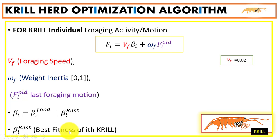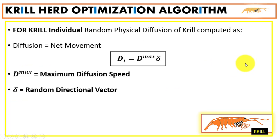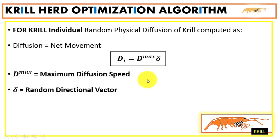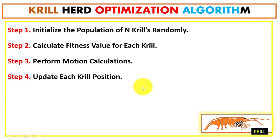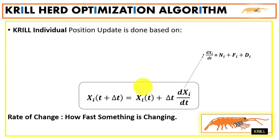The model includes the best fitness of the i-th krill. The foraging speed is set to 0.02. For physical diffusion, which represents net movement, we use an equation with the maximum diffusion speed and a random directional vector.